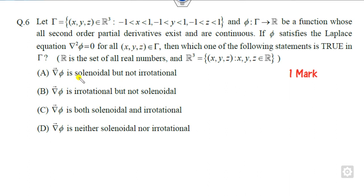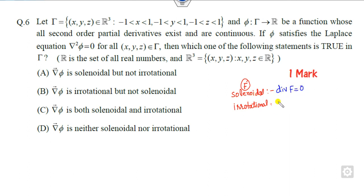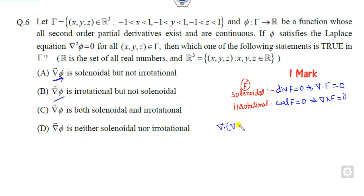Look at the second question. This is related to solenoidal and irrotational. To check if vector field F is solenoidal, you check whether the divergence of F is 0 — that is del dot F equals 0. To check for irrotational, you find curl of F equals 0. Now, del squared of F is given to be 0 as it satisfies the Laplace equation.